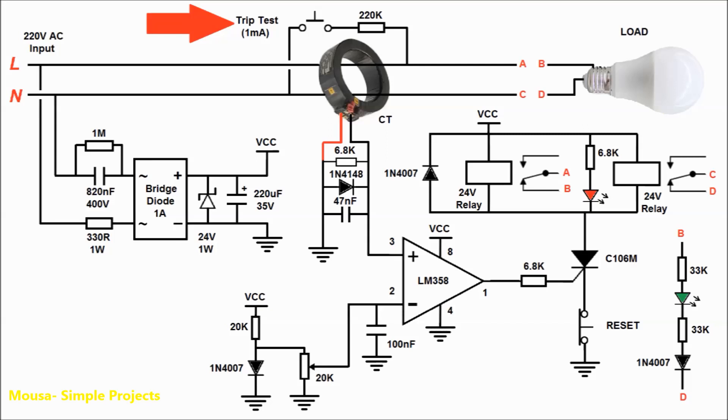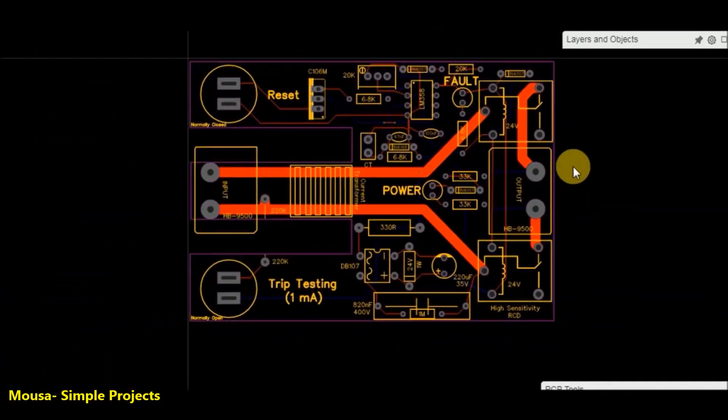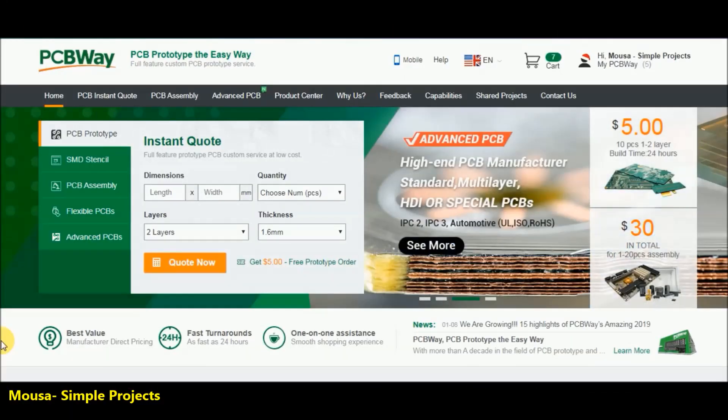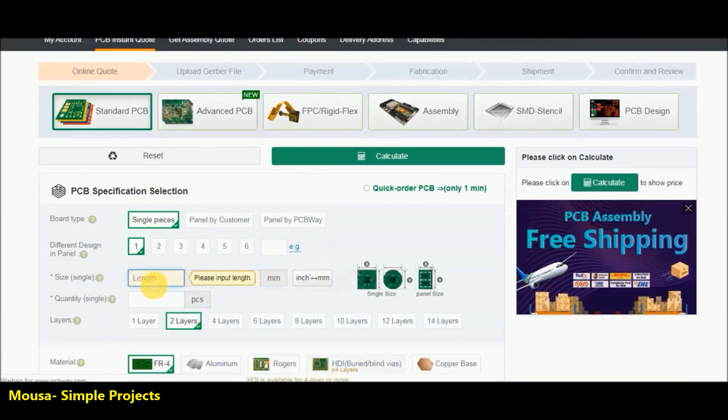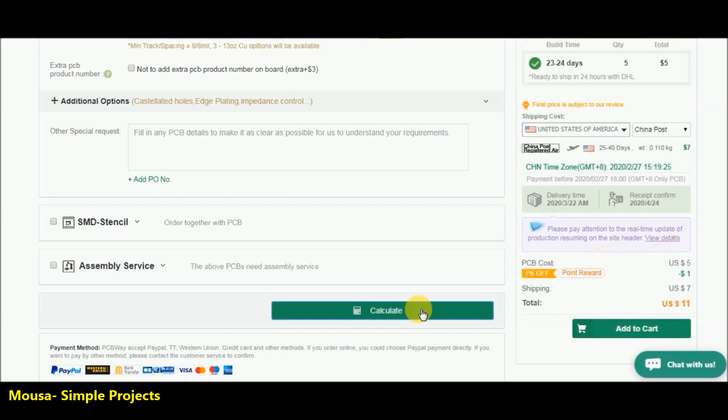I converted this circuit to PCB, then I went to pcbway.com. Insert your PCB size, quantity, and color, then click add to cart. Upload your Gerber file and complete the payment.